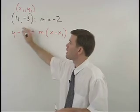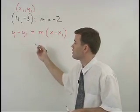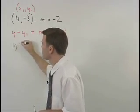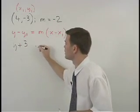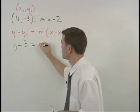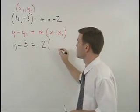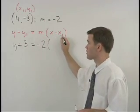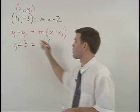Which is y minus a negative 3, or y plus 3, equals m, which is negative 2, times parentheses x minus x1, which is x minus 4.